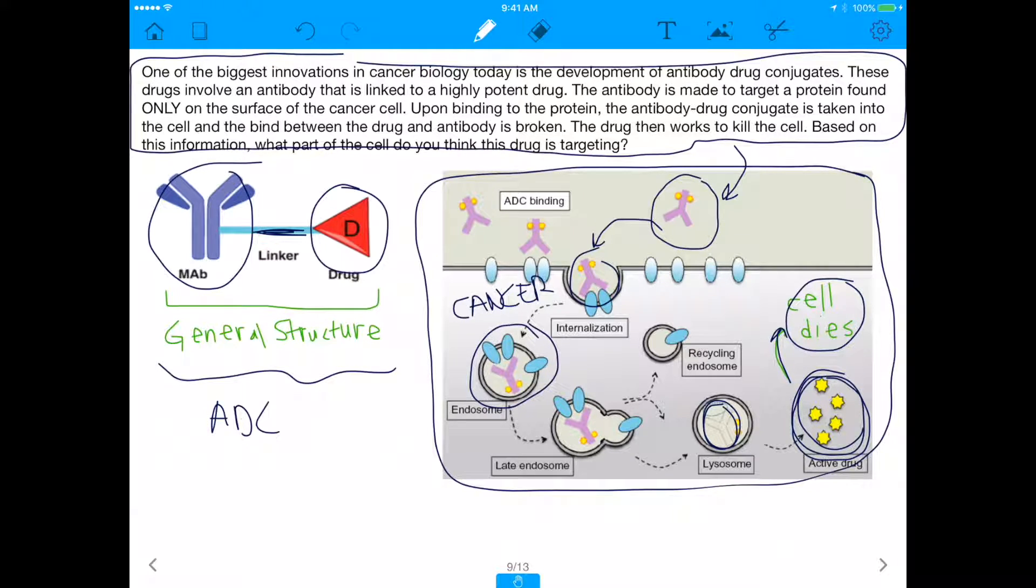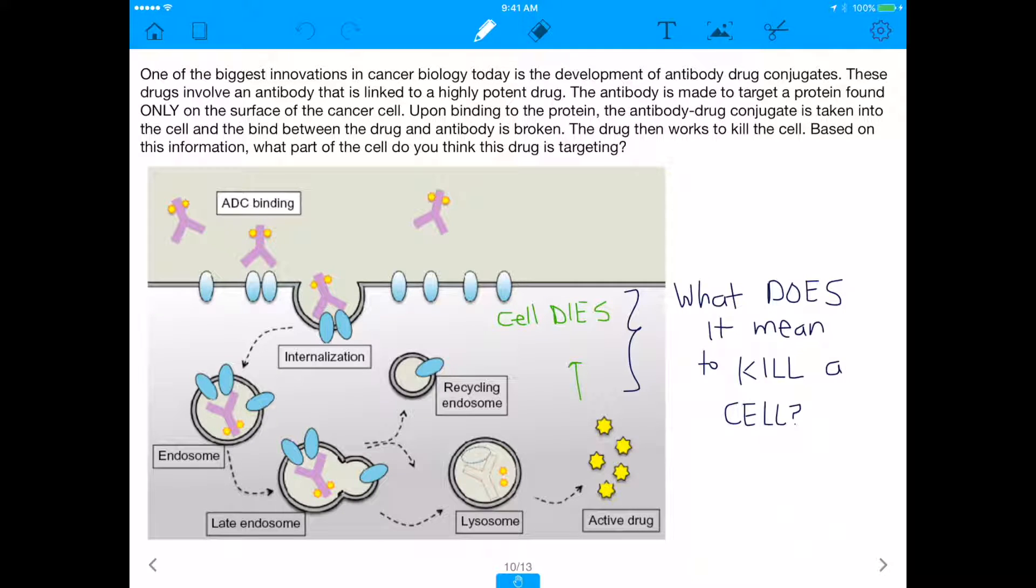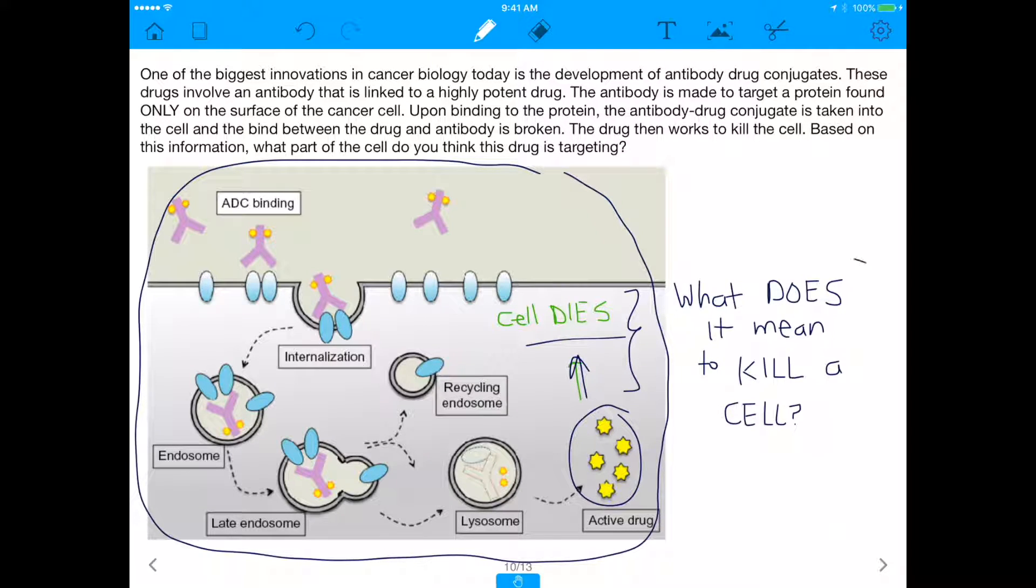Assuming we understand how this works and we understand this process, the question is actually asking us: when this drug becomes active, it causes the cell to die, and the question is saying what do you think is causing it to kill the cell? Like what exactly is this drug doing such that the cell is dying? What part, as the question says, what part of the cell do you think the drug is targeting?